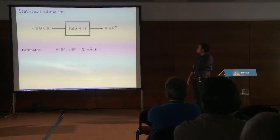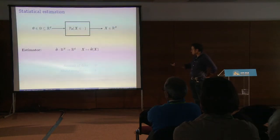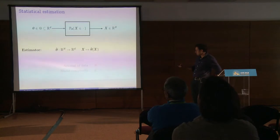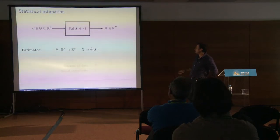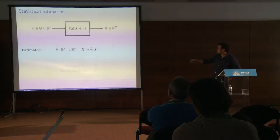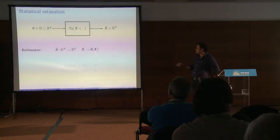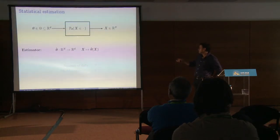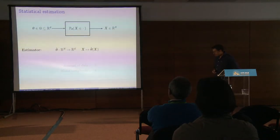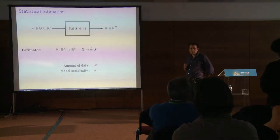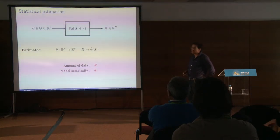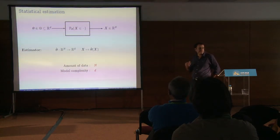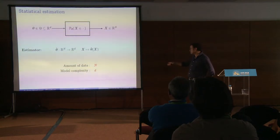This is a simplification, but basically the problem in statistical estimation is the following. You have an object of interest, a vector in a subset of a d-dimensional space, and a probability kernel that for every value of this vector tells you a probability distribution over R^n. You are given one sample of this distribution, and you want to construct an estimator, a function from R^n to R^d, that spits out an estimate of theta. There is clearly a trade-off between how complex the model is — how large the dimension is — and how many data you have. I'll try to give you a flavor of different regimes using these two parameters.